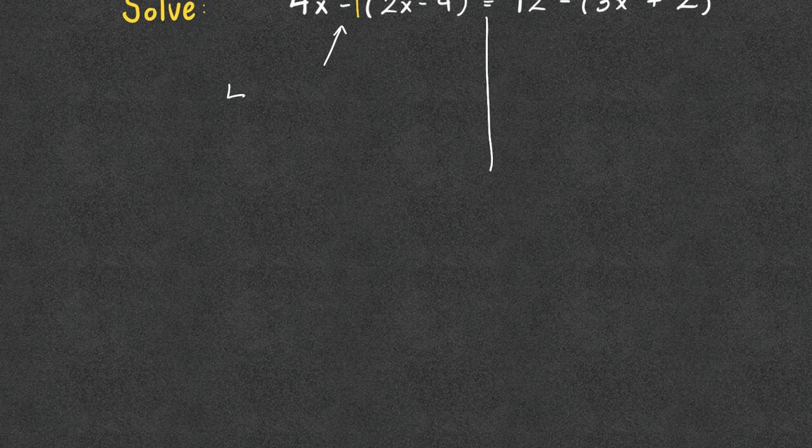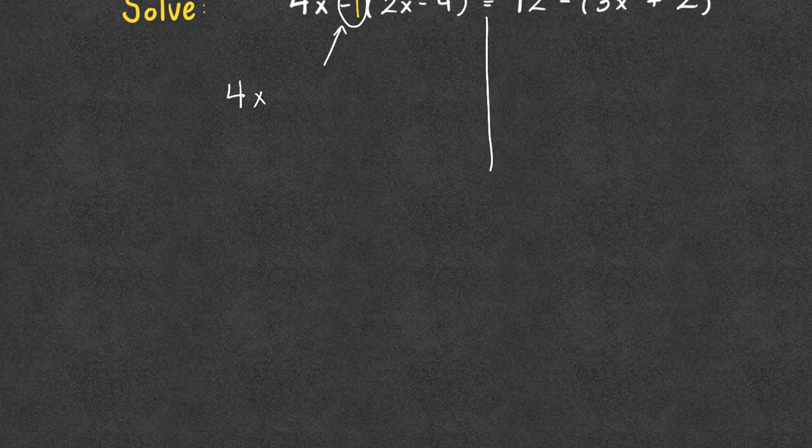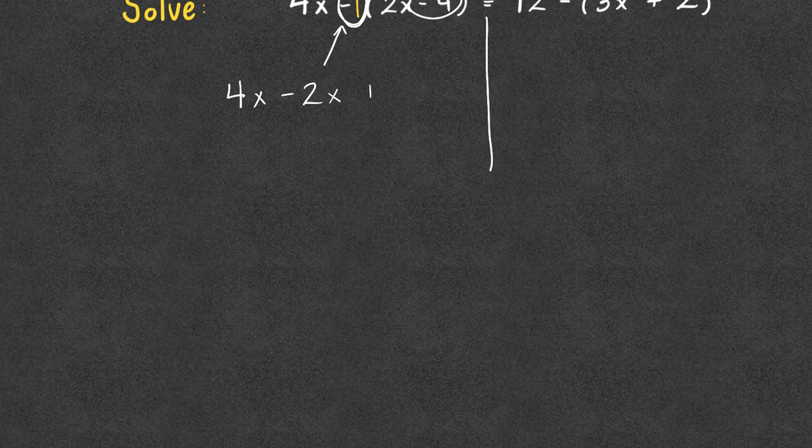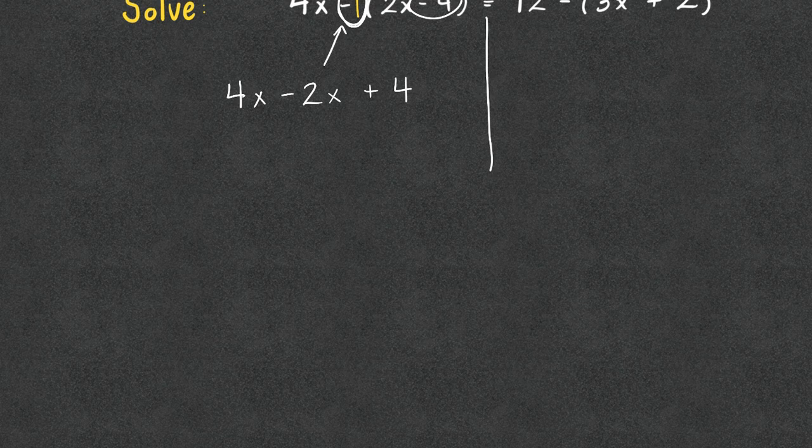So we're going to keep the 4x that we have in the front. We have negative one times 2x, which is going to give us negative 2x, and we have negative one times negative four, which ends up as a positive four. So we have 4x minus 2x plus 4 on the left.